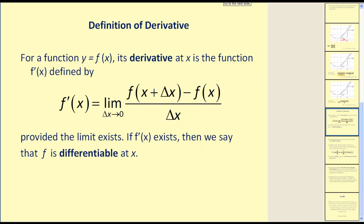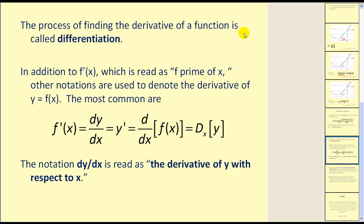Let's go ahead and look at the definition. The definition of the derivative: for a function y equals f(x), its derivative at x is the function f prime of x, denoted by the limit as delta x approaches zero of this difference quotient, provided the limit exists. If f prime exists — that is, the derivative of f(x) — then we say that f is differentiable at x. The process of finding the derivative of a function is called differentiation.